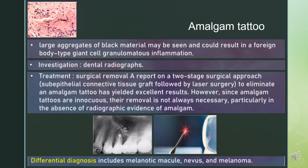Histopathology shows large aggregates of black material and could result in a foreign body-type giant cell granulomatous inflammation. Investigation can be done using dental radiographs. Treatment includes surgical removal — a two-stage surgical approach: subepithelial connective tissue graft followed by laser surgery. However, since amalgam tattoos are innocuous, removal is not always necessary, particularly in the absence of radiographic evidence of amalgam.